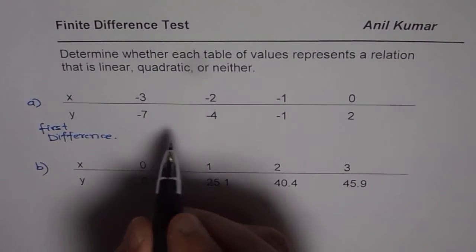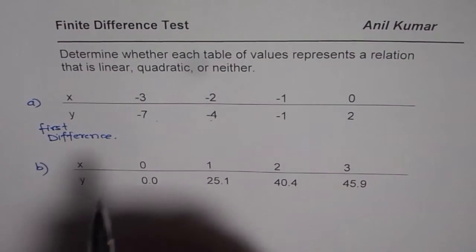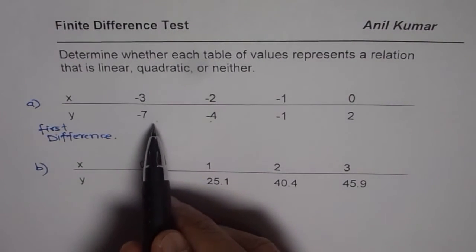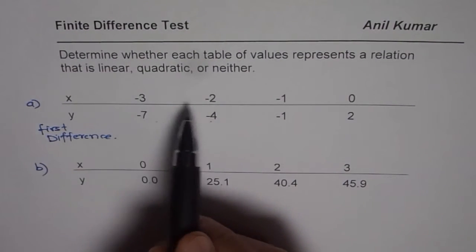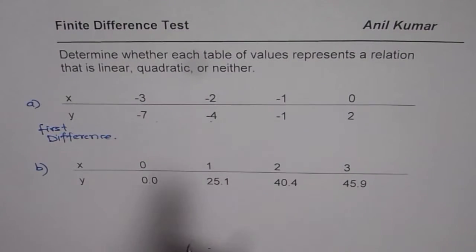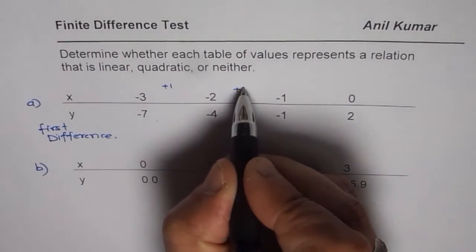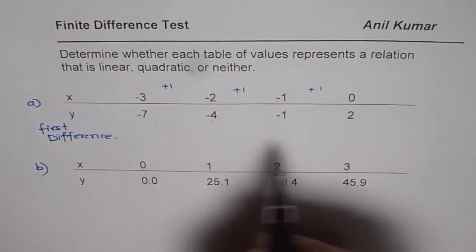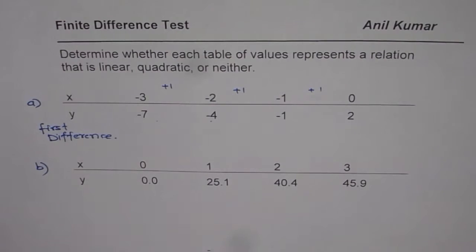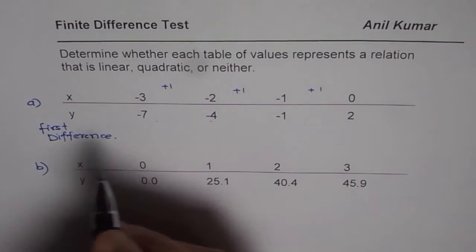Now, first difference is y2 minus y1. Before taking out first difference, you should check that the x values are incremented by the same amount. In this case, they are incremented by 1, so it is good enough to find the first difference by finding y2 minus y1.